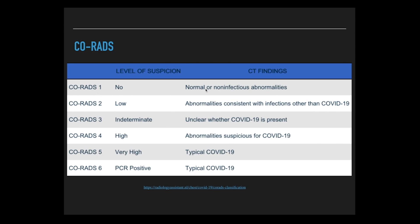CO-RADS 1 is having normal chest CT or other non-infectious abnormalities which don't raise any suspicion of COVID-19. CO-RADS 2 raises a low suspicion where the abnormalities are consistent with infections other than COVID-19. CO-RADS 3 is indeterminate or equivocal where the CT findings are unclear whether COVID-19 is present or not.